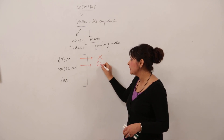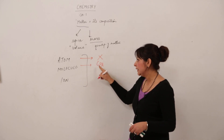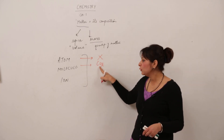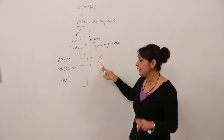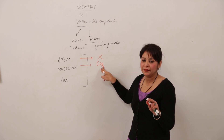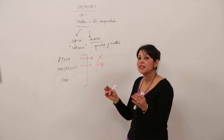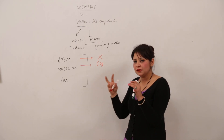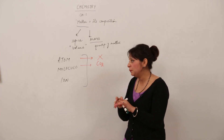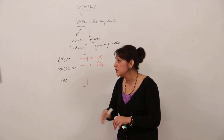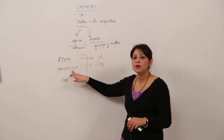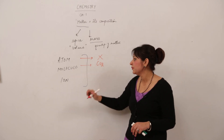For example, CO2 — in CO2 there is one carbon atom and two oxygen atoms. So three atoms are combining, linking by a chemical bond, and they form a molecule.